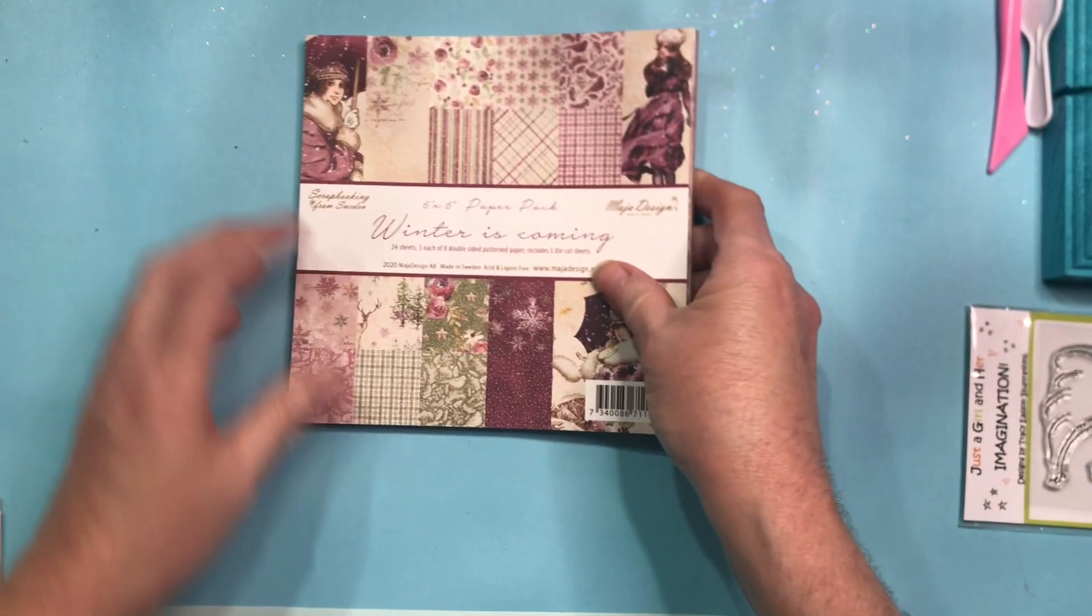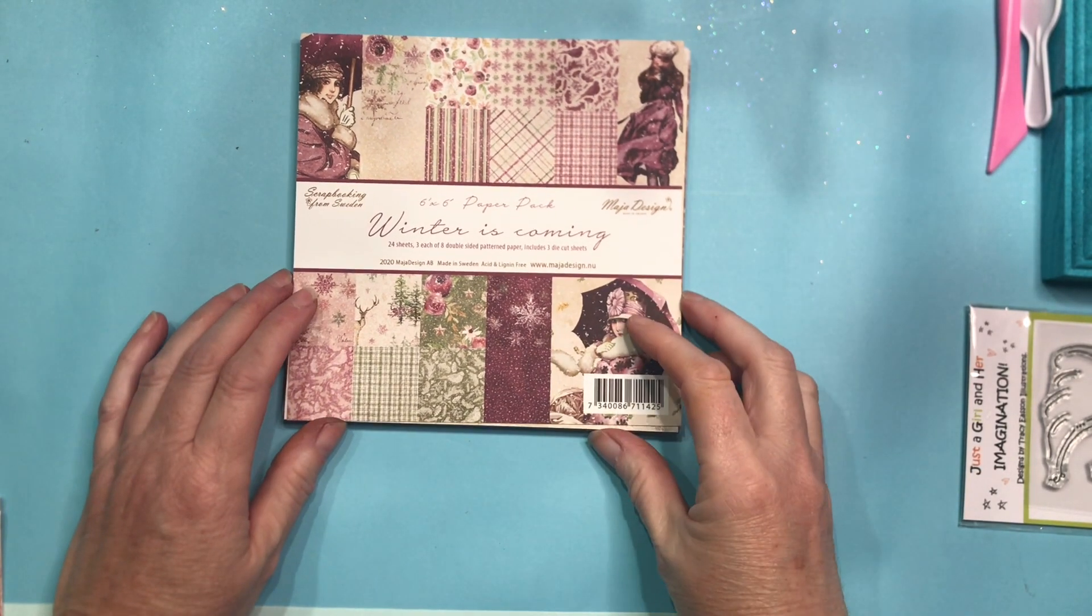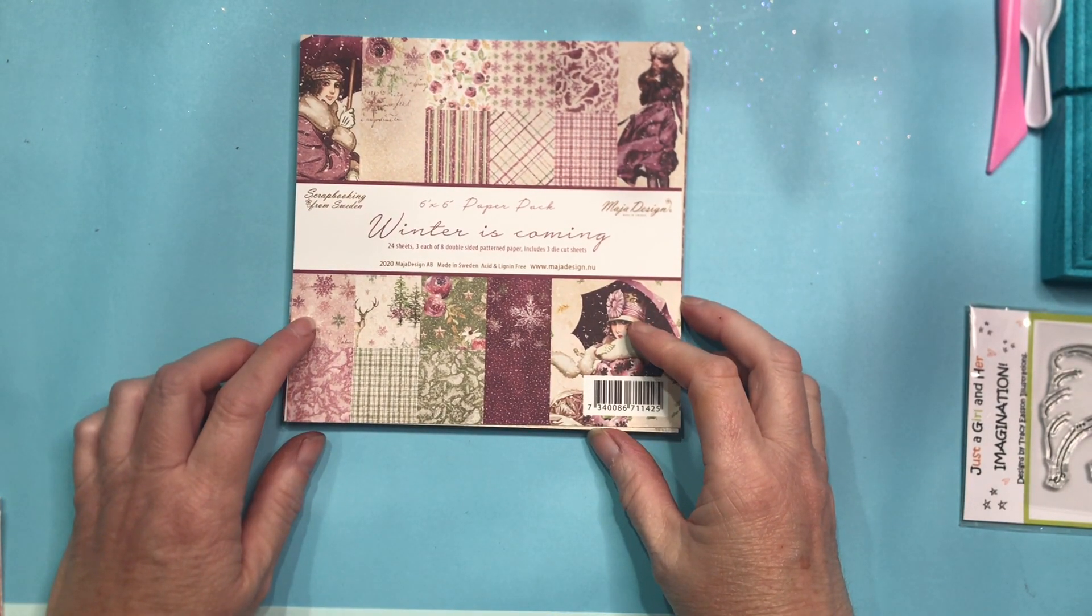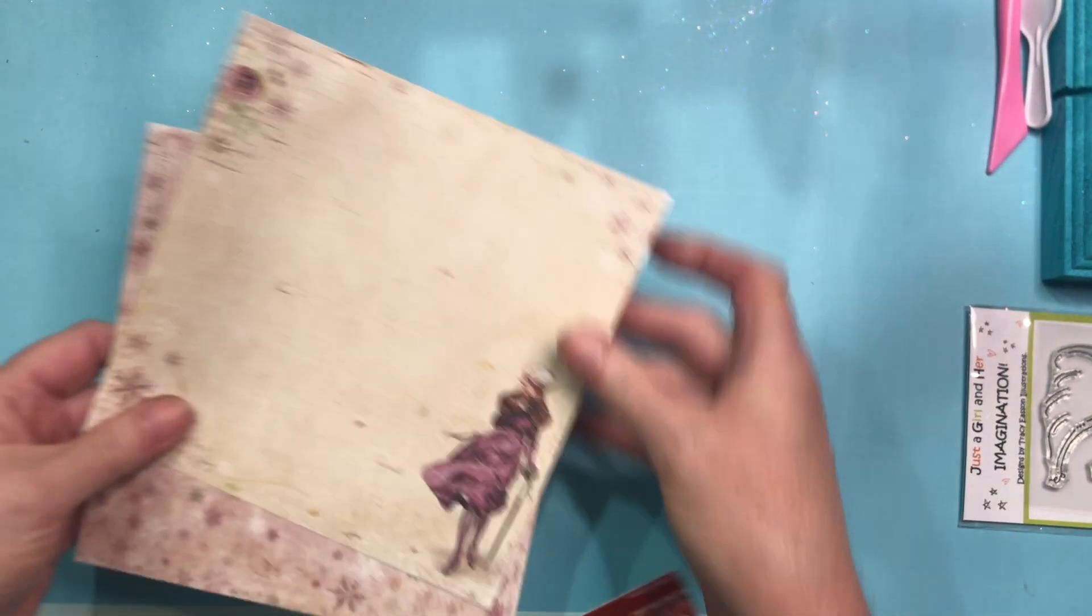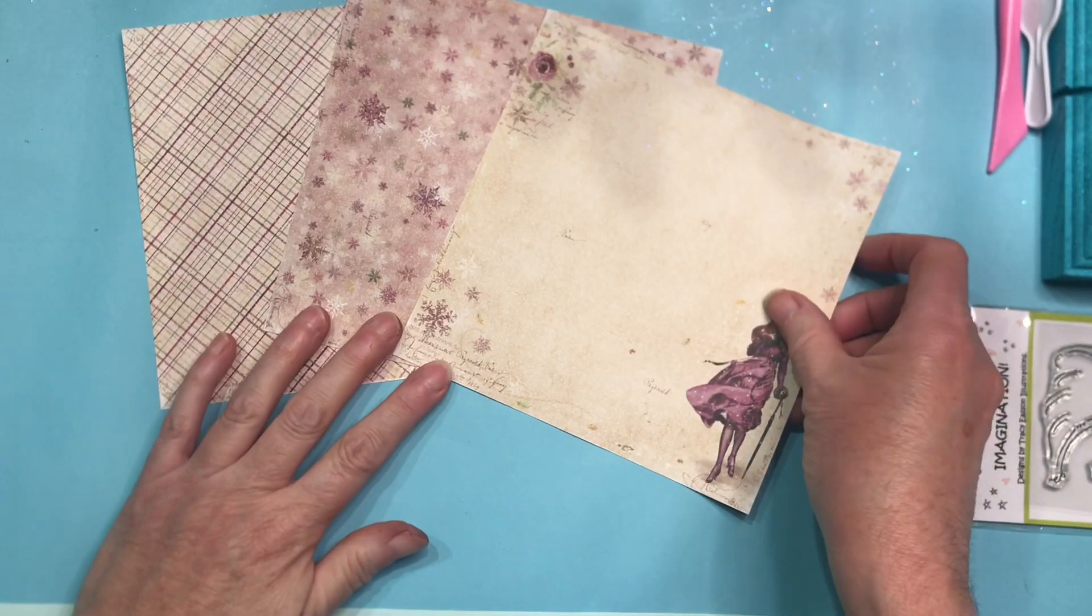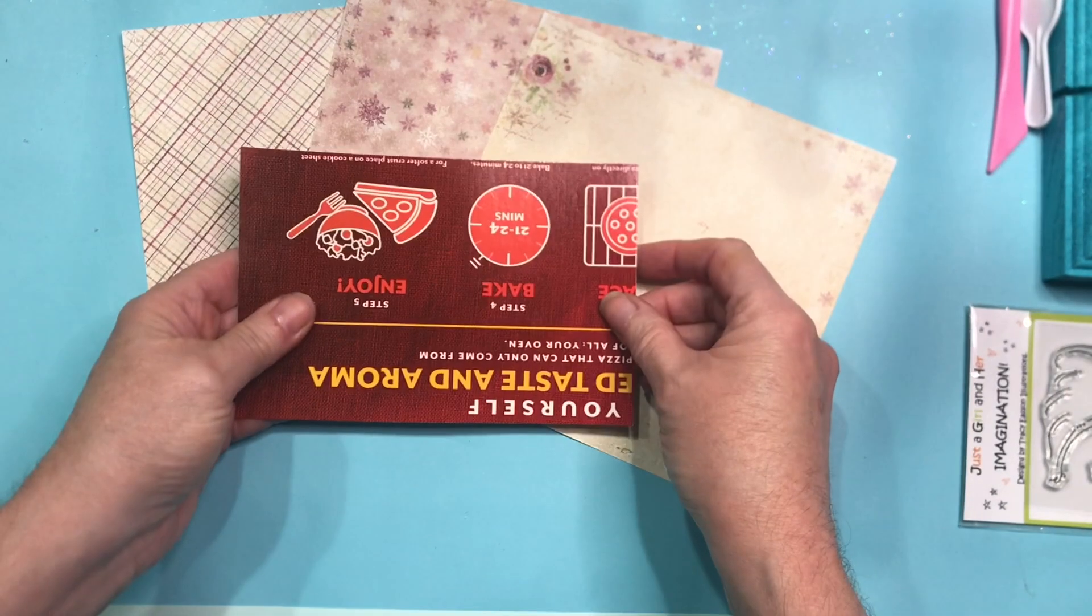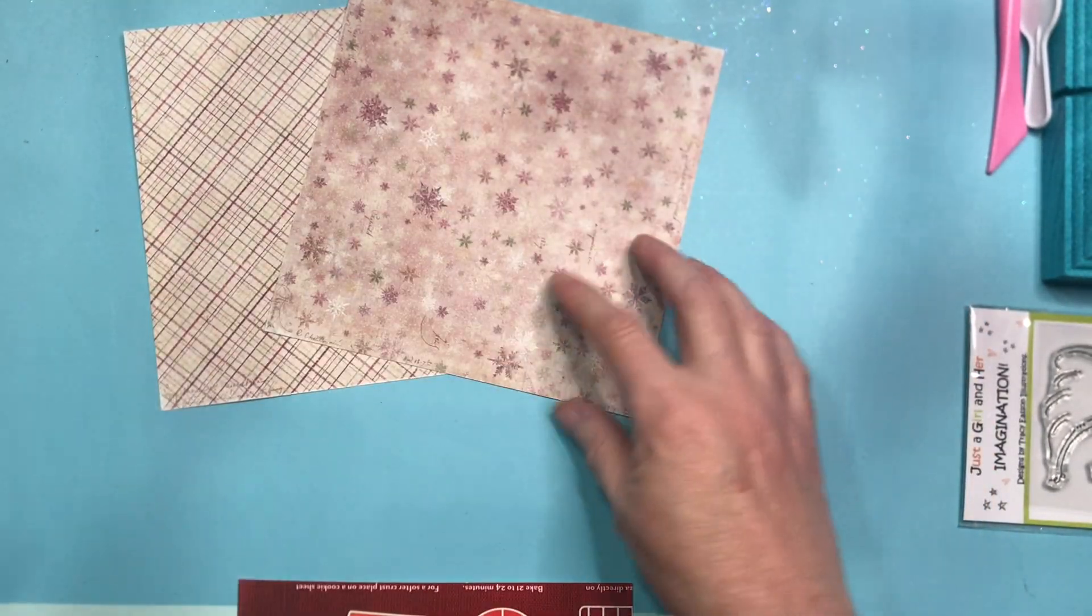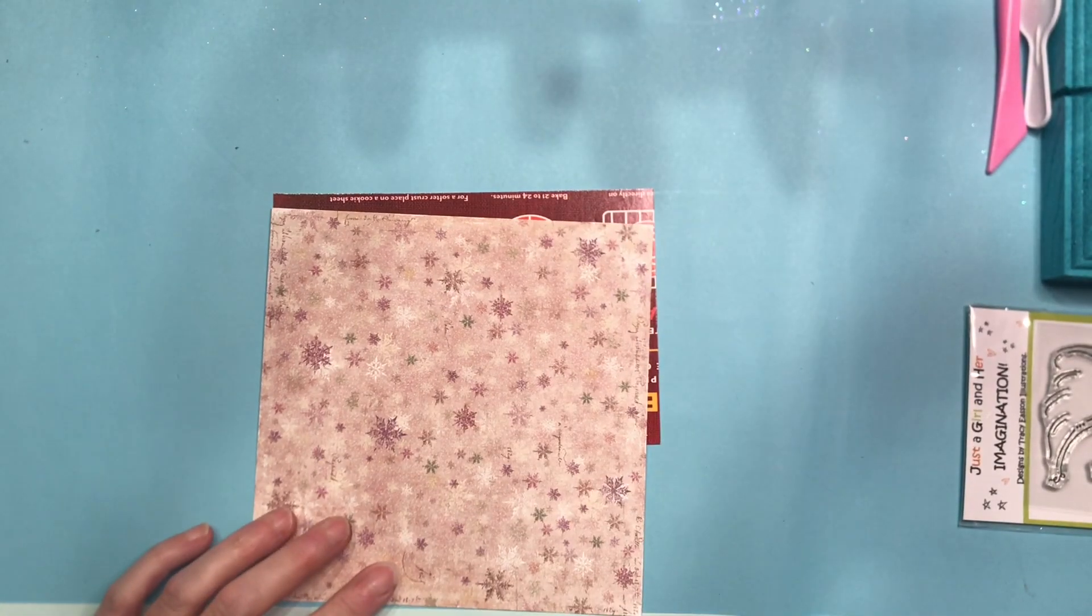I am going to be using this stamp set, it is called the Spread Your Wings from the Soul Whispers collection. We're going to be using the wings and possibly some of the wording. I'm also going to be using a couple of papers from Maja Designs which I got from Spectrum Art Creations, this is called Winter is Coming. So we're going to be making a postcard.